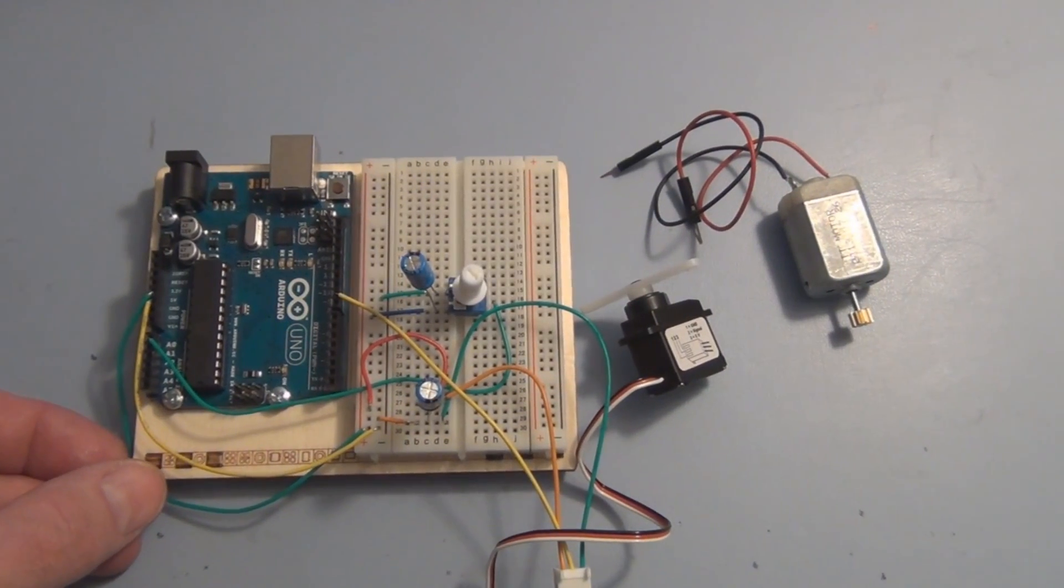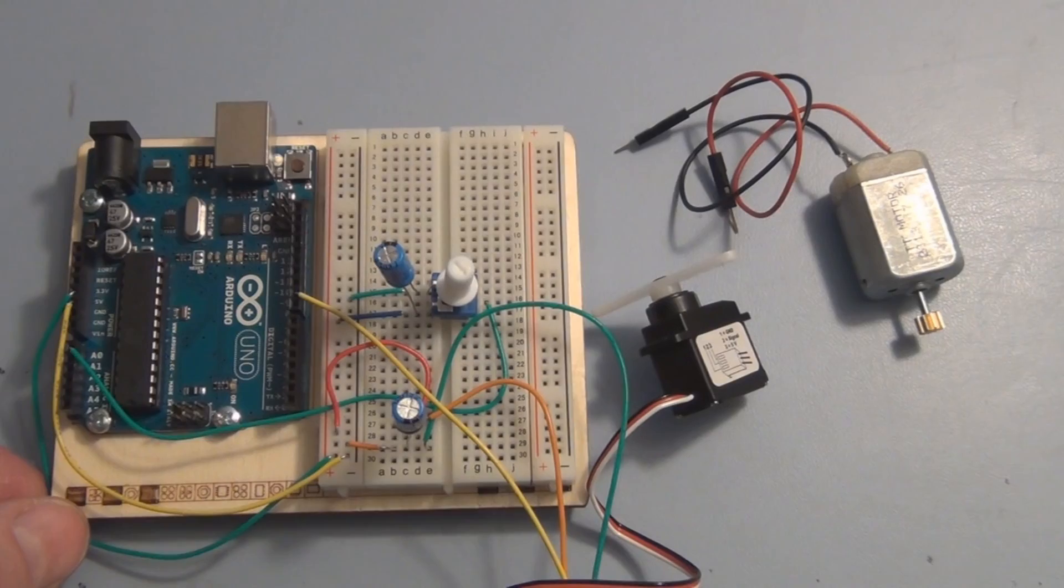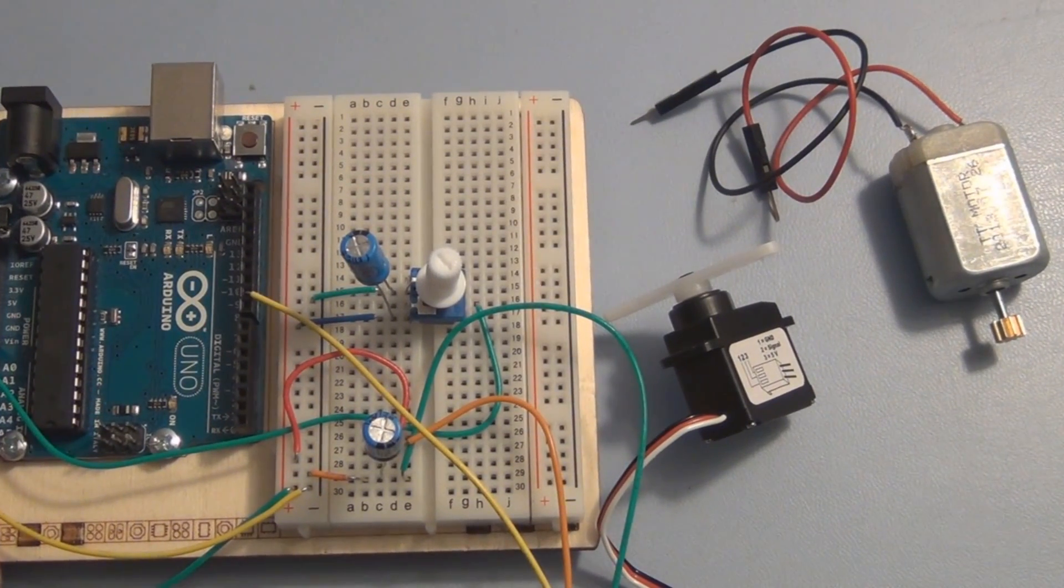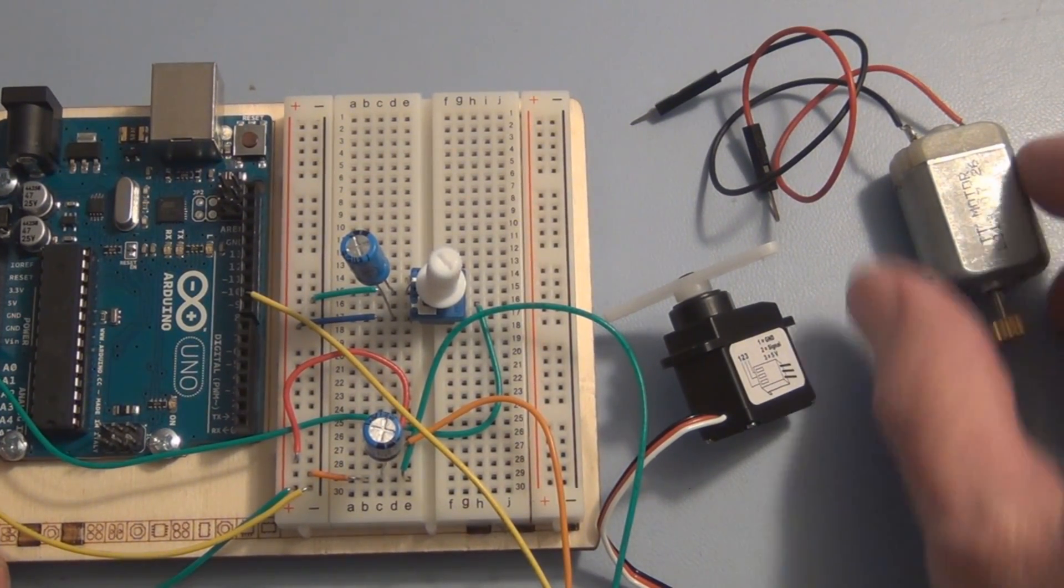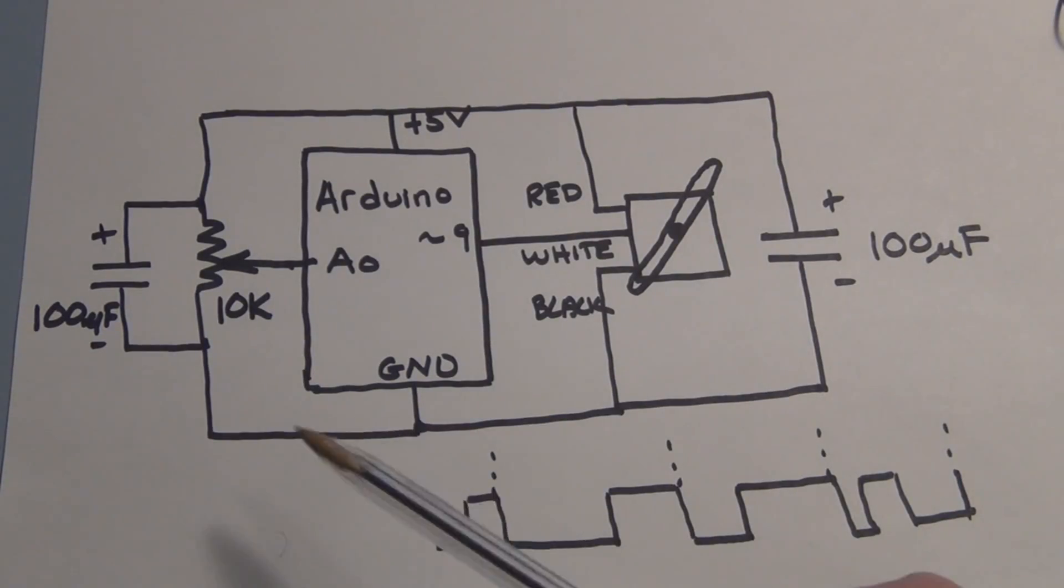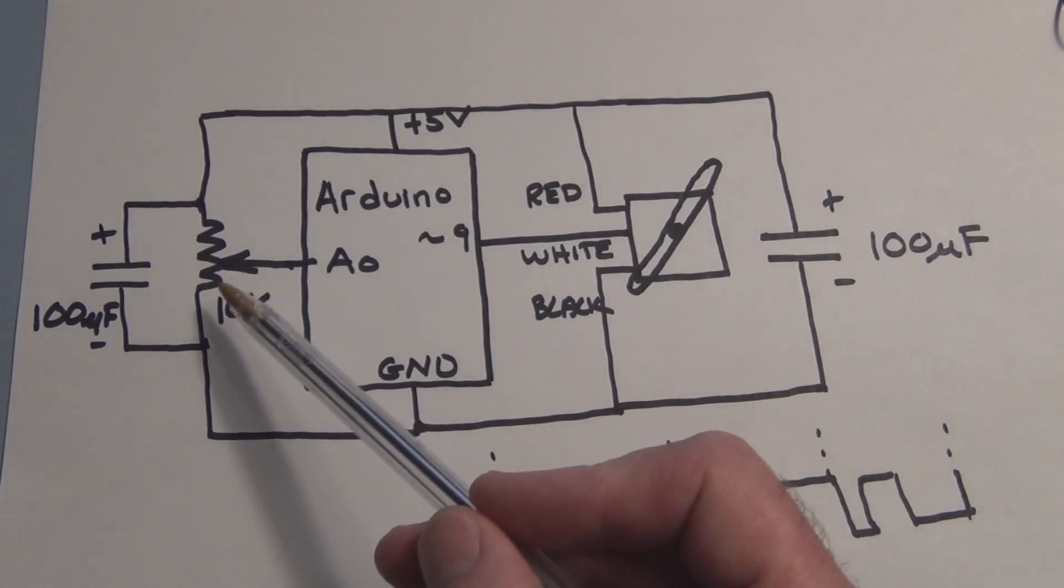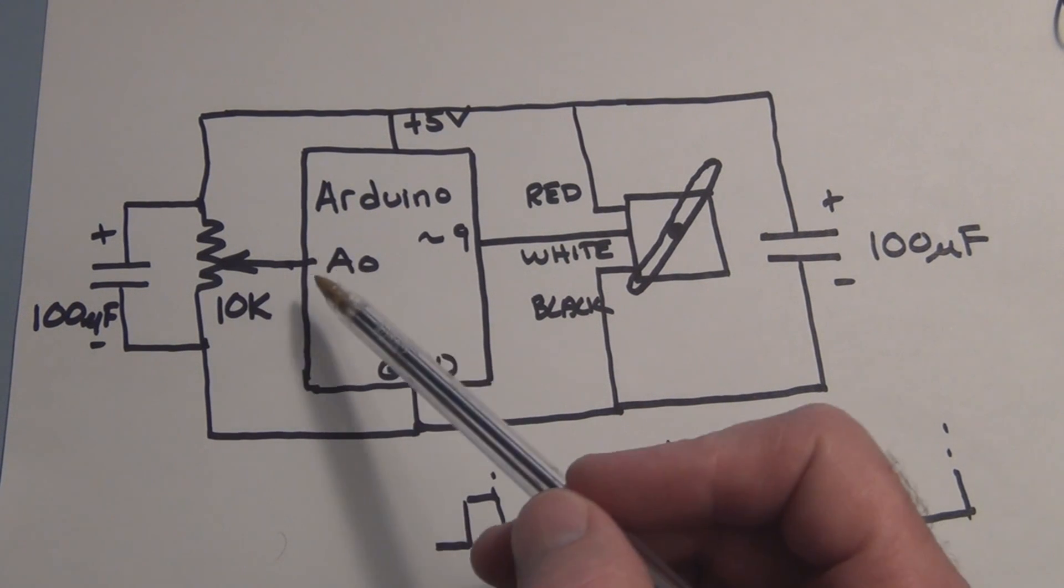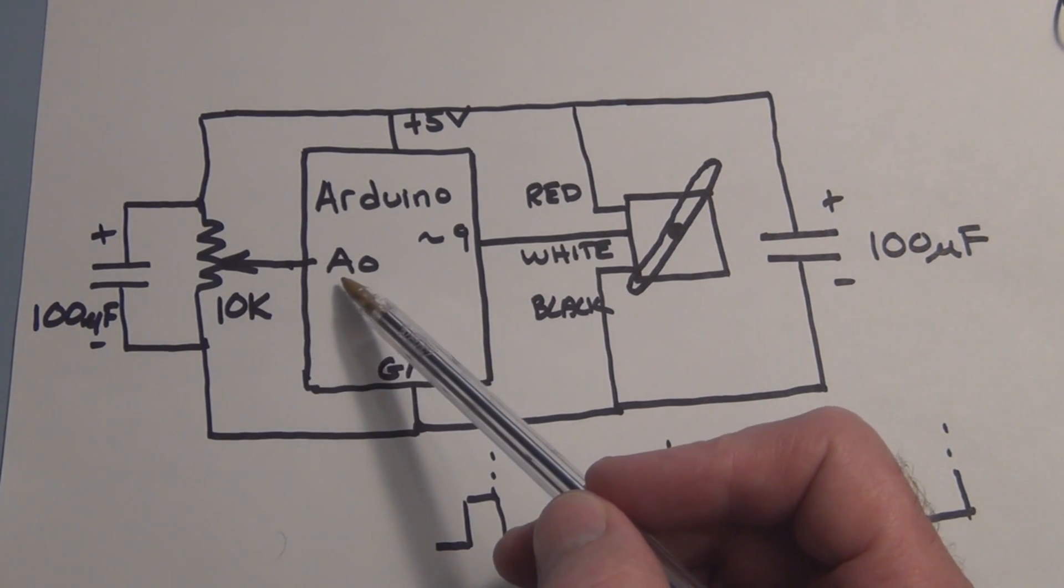So as you can see I've already wired up the circuit but let's take a look at the schematic. So you can see from the schematic we're going to control or vary the voltage on the analog input A0 using this 10k potentiometer.